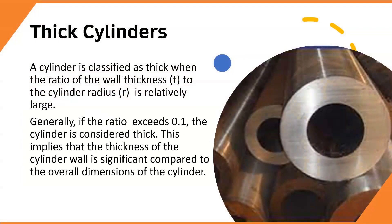This implies that the thickness of the cylinder wall is significant compared to the overall dimensions of the cylinder. Thin cylinders rely on simplified assumptions and equations, while thick cylinders require more complex analysis using theories such as the Lame theory or the theory of elasticity to consider non-uniform stress distributions across the wall thickness.